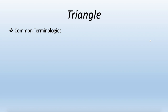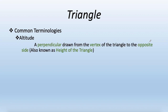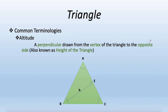Now let's talk about some common terminologies. The first is altitude, sometimes known as the height of a triangle — a perpendicular drawn from the vertex of a triangle to the opposite side. For triangle ABC, AD is the altitude from vertex A to side BC. Similarly, BE is the perpendicular distance from vertex B to AC, and CF is the perpendicular distance from vertex C to base AB.